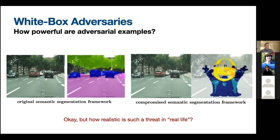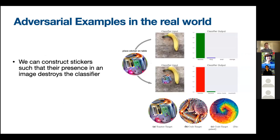A common criticism is: sure, you can inject very precise noise to cause misclassifications, but how realistic is that? To address this, consider adversarial patches — rather than small pixel-level noise, a sticker placed anywhere in the image (rotated however you like) changes the classification from whatever it was originally — in this case a banana — to a toaster. You can do this for any class, and the two that work best are reportedly a toaster and a crab.